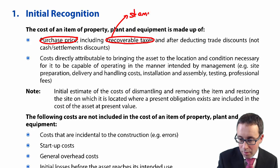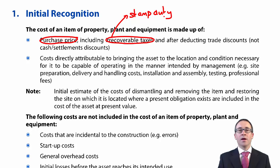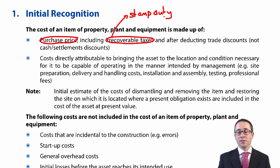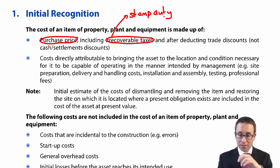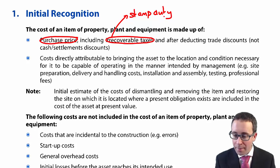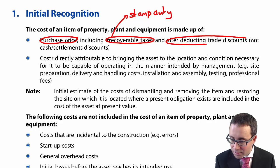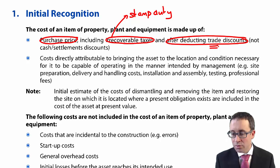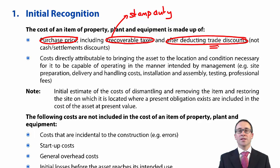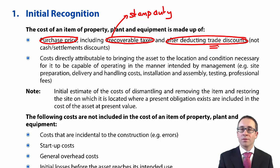You capitalise based upon your purchase price — what you've paid — and that includes any irrecoverable taxes. In the UK, for example, you pay stamp duty on land and buildings, and if you buy a motor car you cannot reclaim sales tax, so that sales tax is irrecoverable and is capitalised as part of the asset cost. You capitalise net of any trade discounts — a discount given to you at the point of sale, meaning you automatically pay less than the list price. You ignore any cash, settlement, or prompt payment discounts.